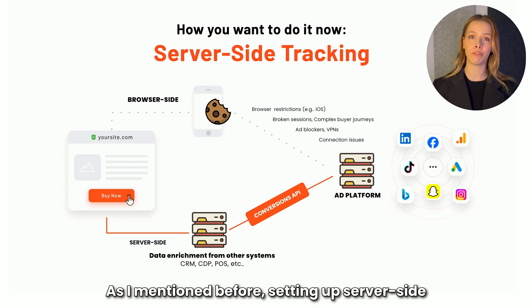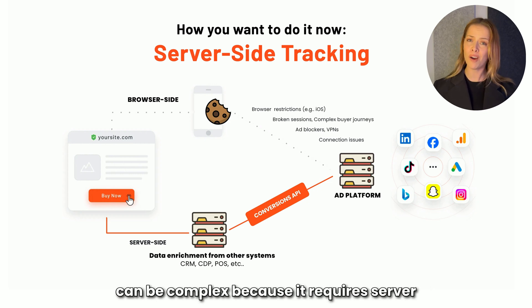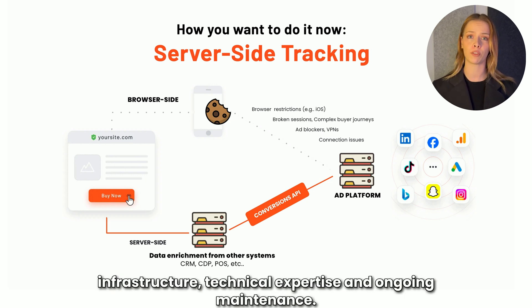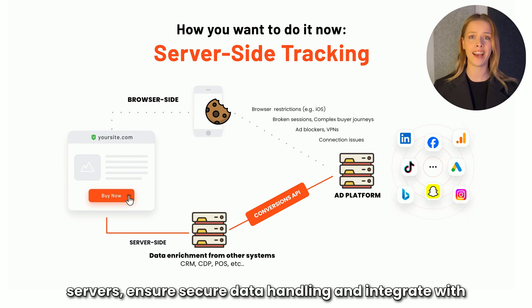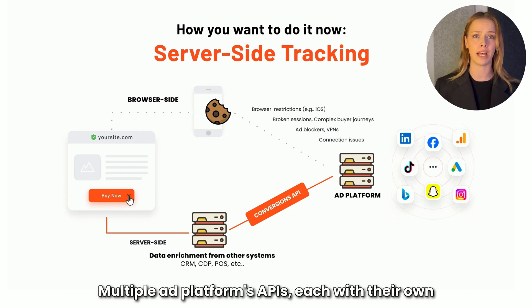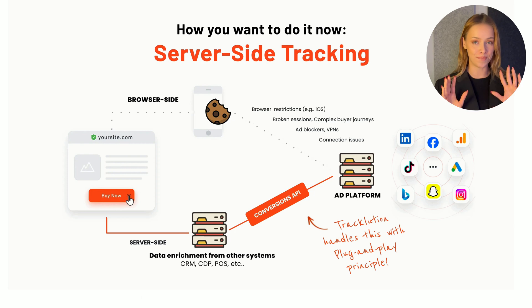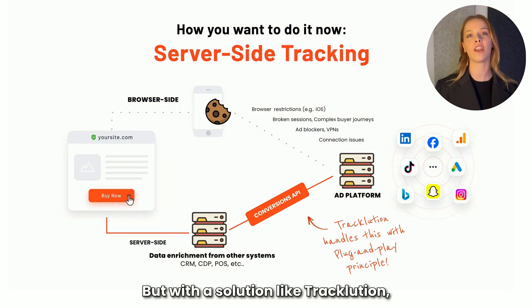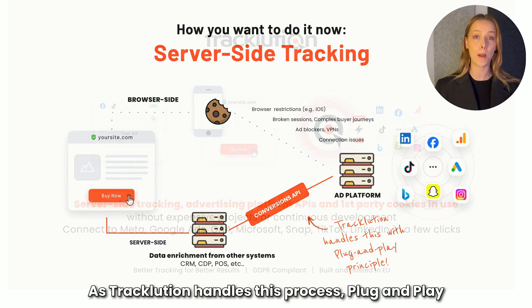As I mentioned before, setting up server-side tracking and using conversion APIs manually can be complex because it requires server infrastructure, technical expertise, and ongoing maintenance. You need to configure cloud or on-premises servers, ensure secure data handling, and integrate with multiple ad platform APIs, each with their own authentication and data formatting rules. But with a solution like Tracklusion, all your worries are gone as Tracklusion handles this process plug-and-play.